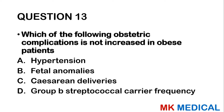Moving on to the gynecology section, which is likely easier than the obstetrics section. If you're still below 15, here's a chance to redeem yourself. Question 31: The uterus and fallopian tubes arise from which structures? A — Wolffian ducts. B — Müllerian ducts. C — urogenital sinus. D — sinovaginal bulbs. E — mesonephric ducts. The answer is B — the Müllerian ducts.